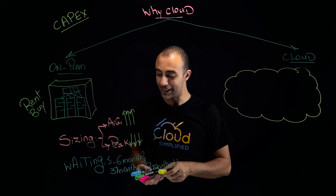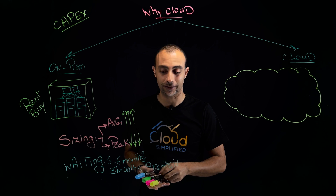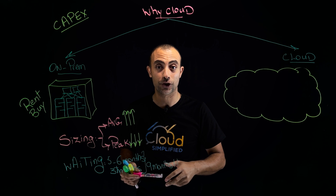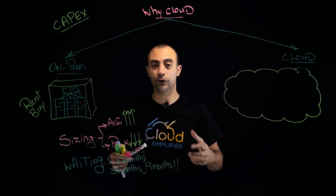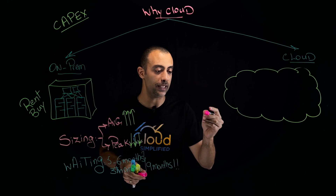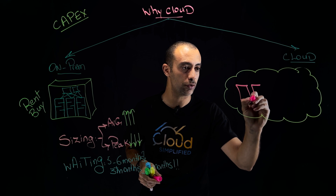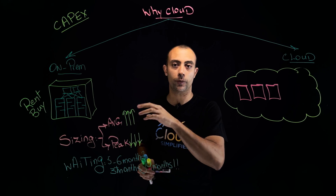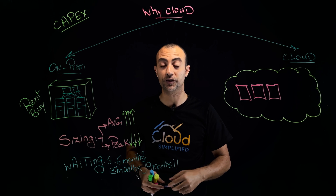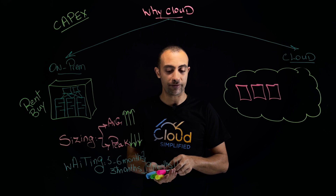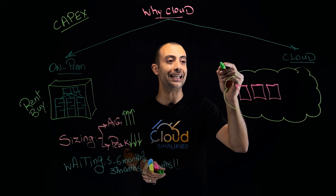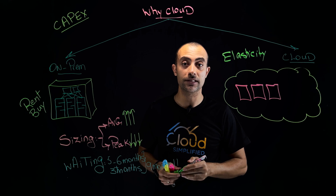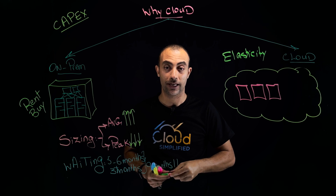For sizing on the cloud, the good news is you don't size according to the peak — you size according to the average. Imagine your application needs a minimum of three virtual servers. The challenge on-premise was handling peak times, but on the cloud we have the concept of elasticity, meaning you are not bounded to your hardware.